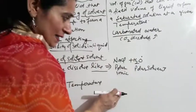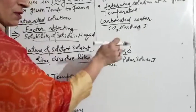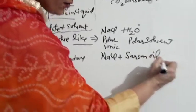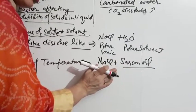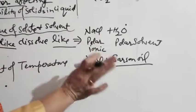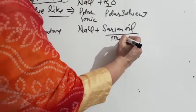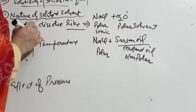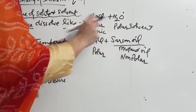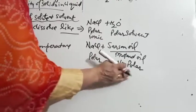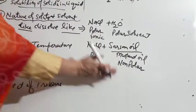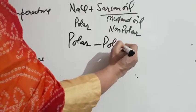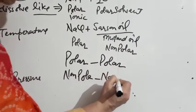You can try this at home: take half a glass of water and add salt — it will dissolve. But if you take mustard oil and add a little salt to it, the salt will not dissolve in the oil. The reason: mustard oil is non-polar, and NaCl is polar — polar will not dissolve in non-polar. In general, polar dissolves in polar, and non-polar dissolves in non-polar.